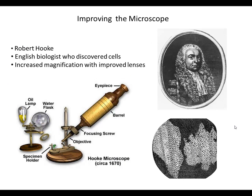Improving the microscope was really important for us to get even better insight into the cell as the basic unit of life. One of the scientists most credited with really improving the microscope and using it systematically was Robert Hooke, an English biologist who is famous for discovering cells. He's the one who names what we now know as the basic unit of life — a cell. He was able to increase the magnification of his microscopes by using improved lenses, working on and improving the ability to grind curved lenses.